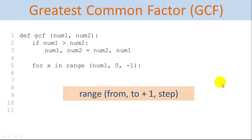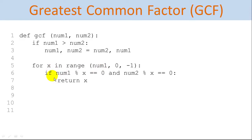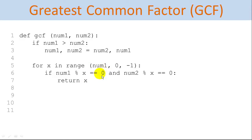We have our for loop counting down from num1, and for each number x in this range, we check if num1 mod x is zero and num2 mod x is zero — in other words, both num1 and num2 are evenly divisible by x. If so, we return x. That's our answer — that's our Greatest Common Factor. Since we're starting at the top and counting down, we'll find the greatest common factor first.